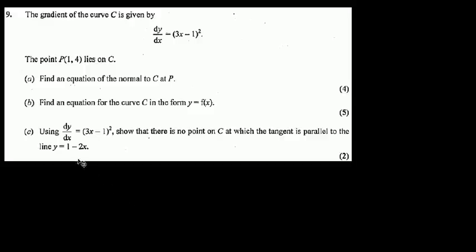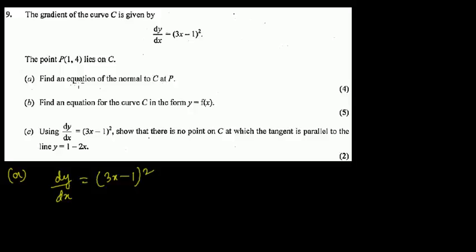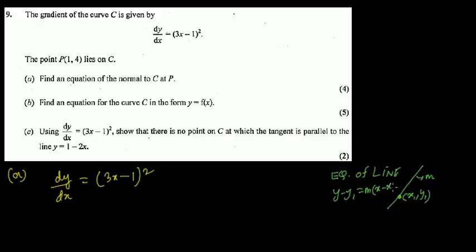This question falls under calculus. dy/dx is given as (3x - 1)². The first question is to find the equation of the normal to curve C at point P. For that, the equation of a line requires a point (x₁, y₁) and a gradient m, giving us y - y₁ = m(x - x₁).